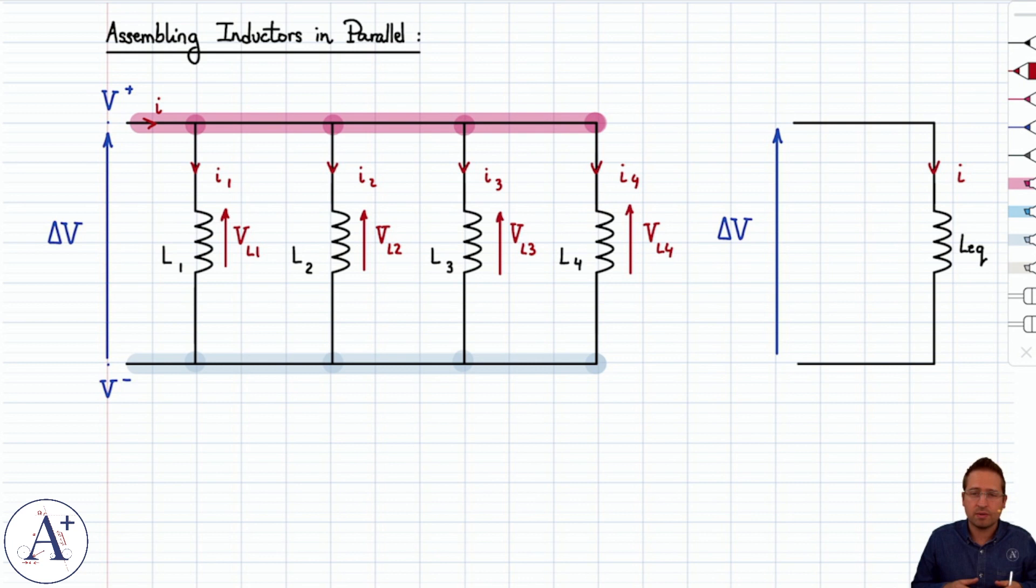And the goal is to establish how this arrangement behaves so that we can compare it to the equivalent circuit here, where we have one single equivalent inductor with the voltage VL equivalent across it. And recall that VL equivalent is going to be minus L equivalent delta I over delta T. And so we're going to try to get the same kind of expression or equation for the circuit on the left-hand side so that we can compare them and figure out the expression of L equivalent.